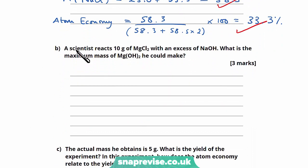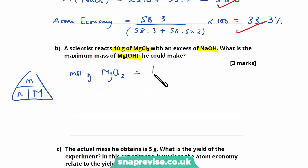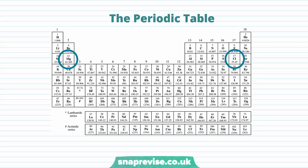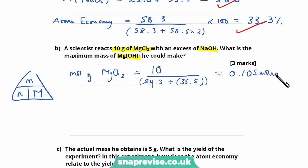Moving on to part B. A scientist reacts 10 grams of magnesium chloride with an excess of sodium hydroxide. What is the maximum mass of magnesium hydroxide he could make? Using the formula moles equals mass divided by molar mass, the mass is 10 grams and the molar mass of MgCl₂ is 24.3 plus two lots of 35.5. This gives us 0.105 moles of magnesium chloride.